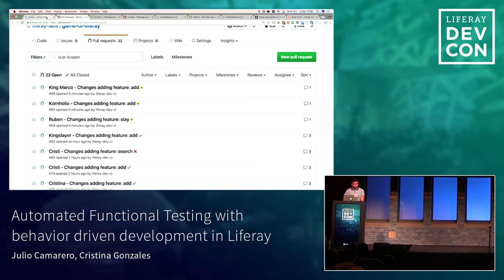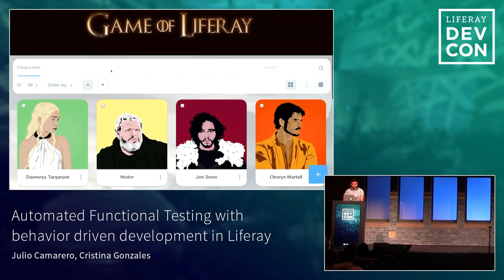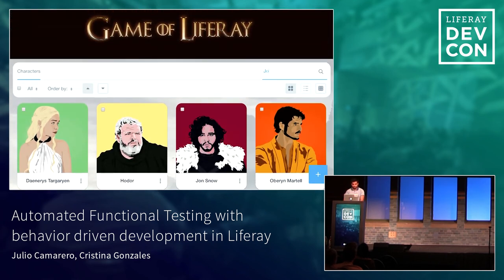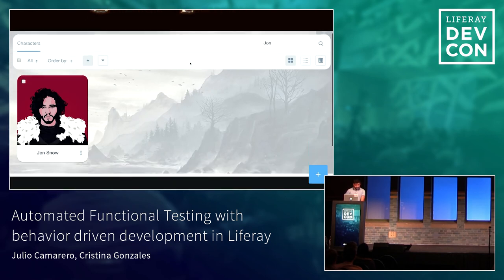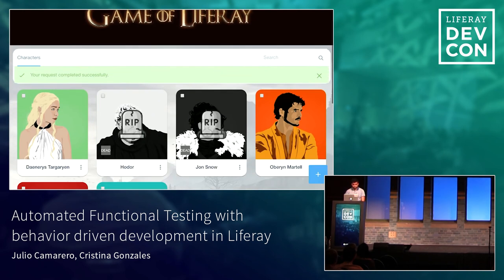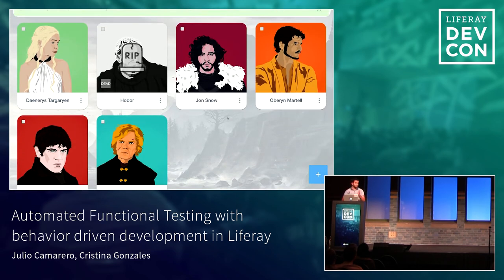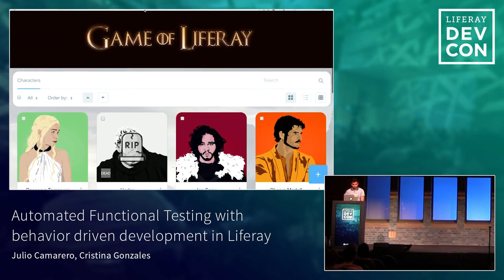If you follow the link in your pull request to the demo, you will find this demo. You can search — try searching for Jon Snow. You can also kill characters. You can also revive them if you want, and you can also add new characters. All these features are here. You can see all the source code in the repository — the link to the source code is in the pull request.